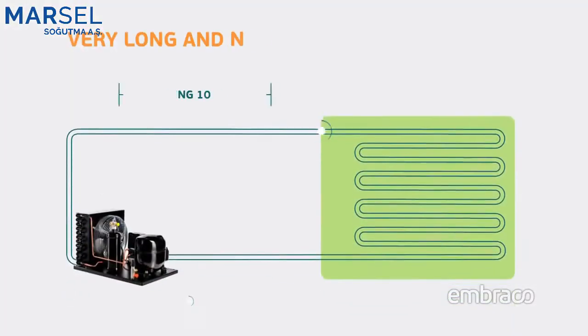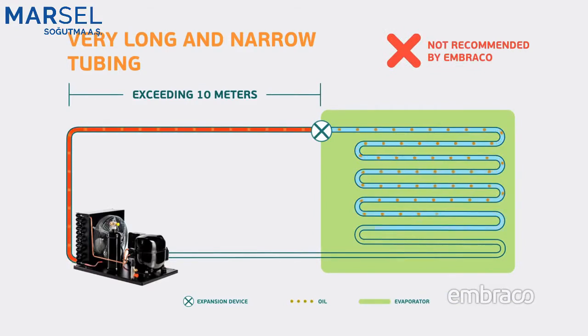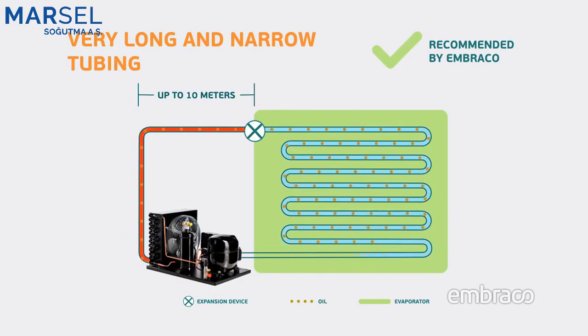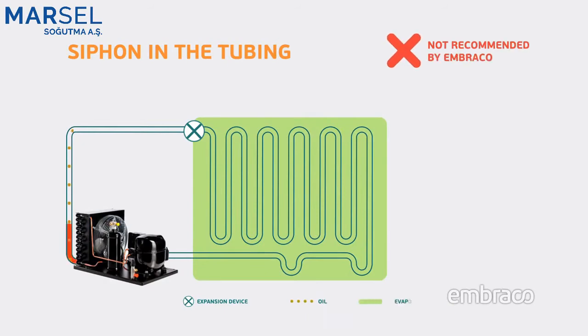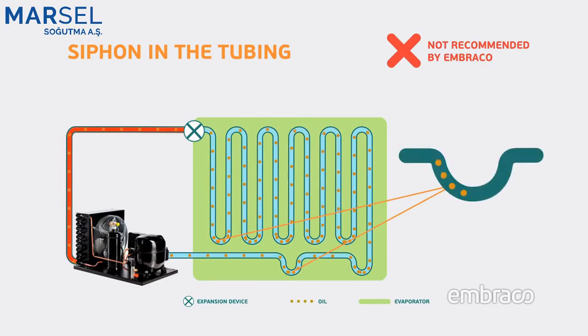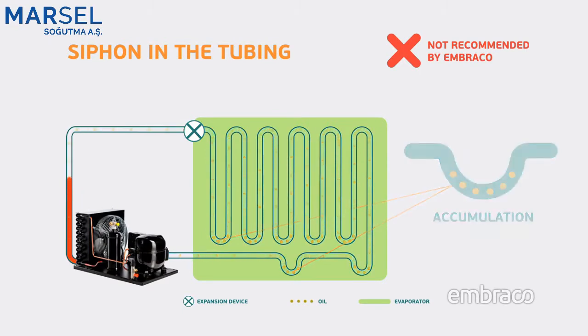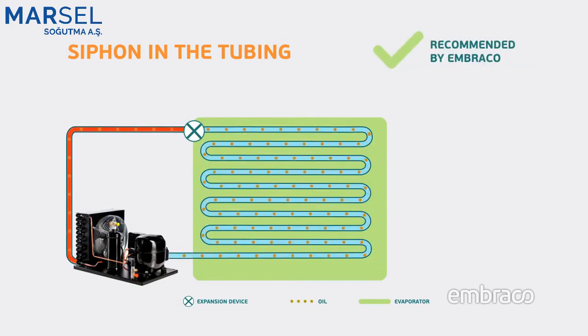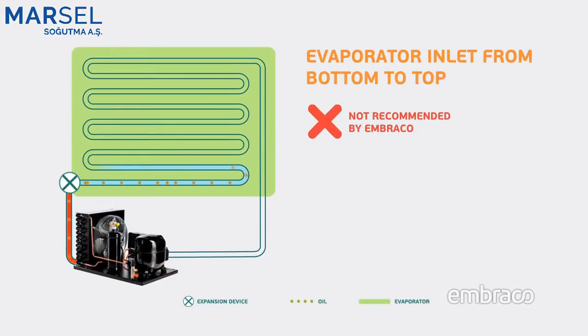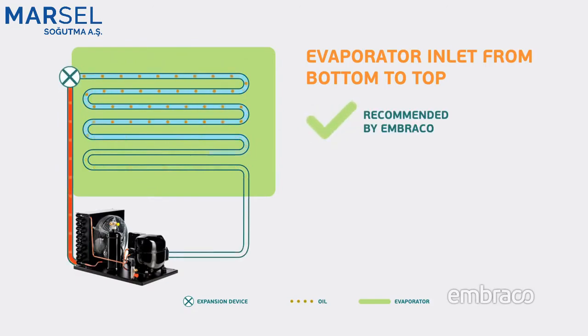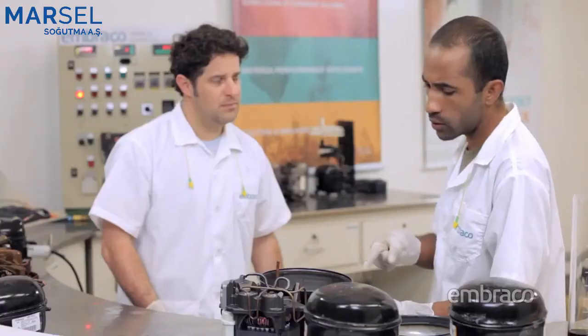When there's an obstruction in the tubing or problems in the system's sizing, the oil can't return, causing the charge to be less than ideal. Sizing problems include very long and narrow tubing, siphon in the tubing, and evaporator inlet from bottom to top. When the compressor operates with an oil charge lower than specified, there will be increased wear, which can reduce the useful life of the compressor and could create a locked rotor situation.